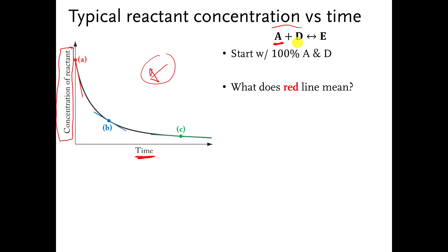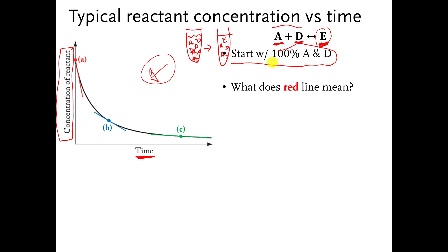We need to take molecules A and D and mix them together, and somehow they bang into each other and they turn into molecule E. Imagine that you have a test tube filled with a bunch of A and D molecules, and if you wait a little while, some of those get converted into E's. In this pretend story, we start with a test tube filled completely with A's and D's — there are no E's at all.